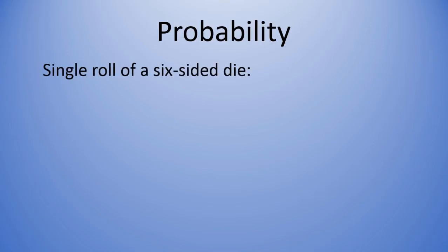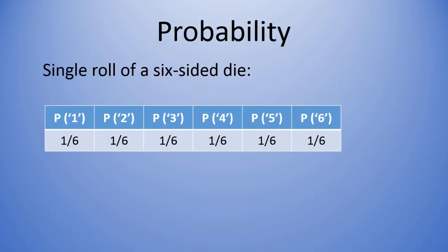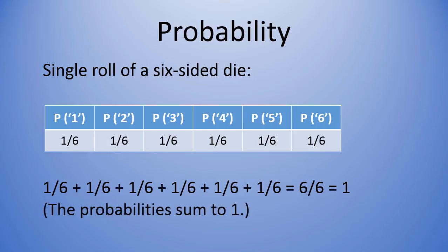For our example of a single roll of a six-sided die, the probability of getting a one, two, three, four, five, or six, those are all equal. They're each one-sixth, so they're all equally likely. And we can see in this example as well, when those probabilities are added together, they sum to one.